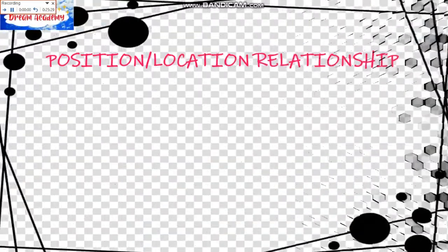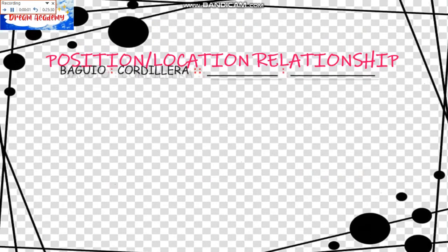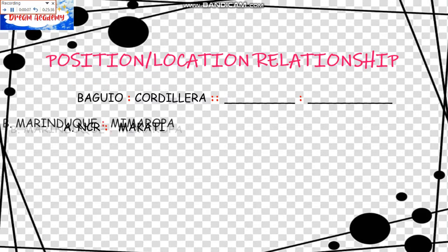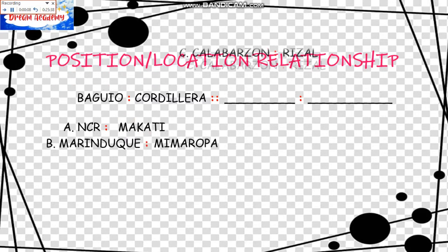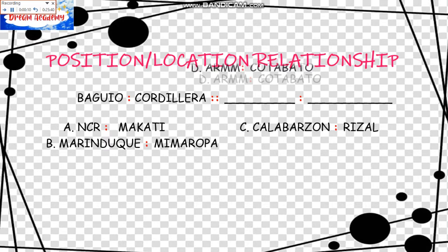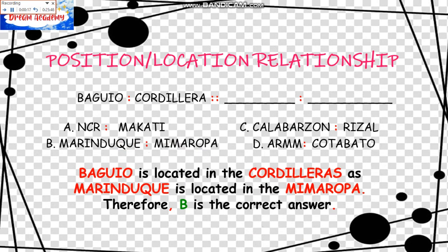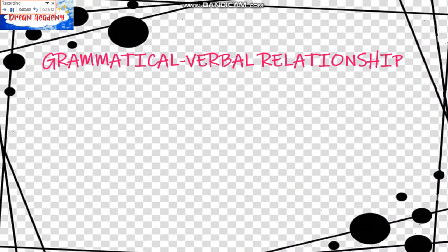The next one is the Position-Location Relationship. Baguio is to Cordillera as blank is to blank. The choices are: A, NCR is to Makati; B, Marinduque is to Mimaropa; C, Calabarzon is to Rizal; D, ARMM is to Cotabato. Baguio is located in the Cordilleras as Marinduque is located in Mimaropa. Therefore, B is the correct answer.